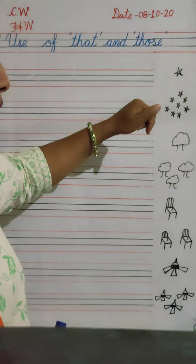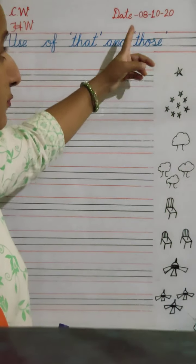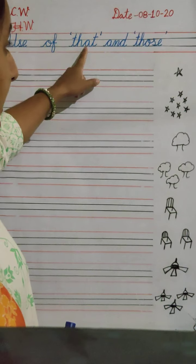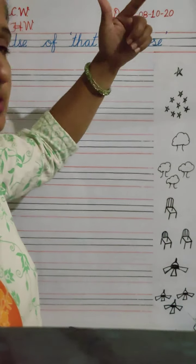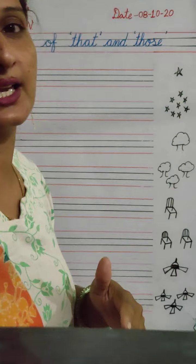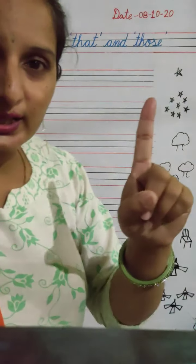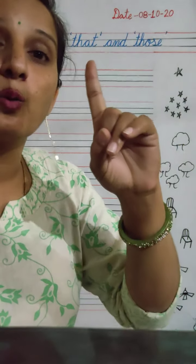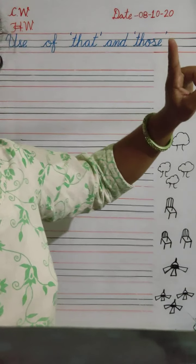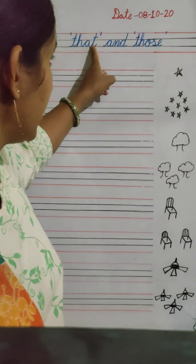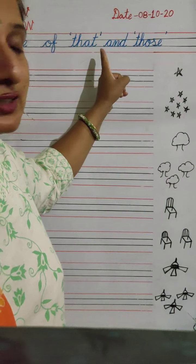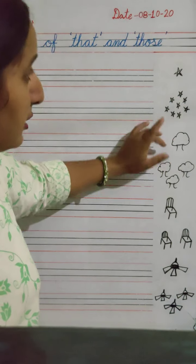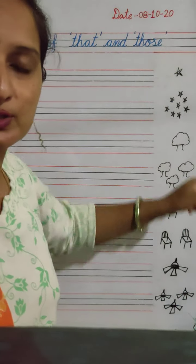then we will use 'that' and 'those'. Now, when will you use 'that' and when will you use 'those'? If aapko that kab use karna hai aur those kab use karna hai — for one thing, if the object is far from us and there is one thing, then we will use 'that'. For many objects, we will use 'those'.